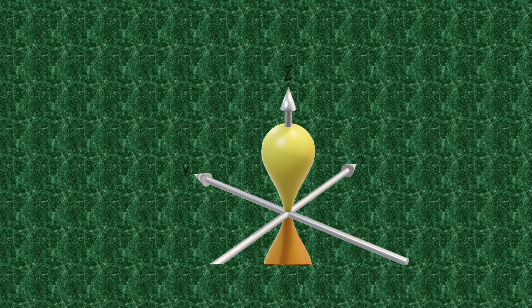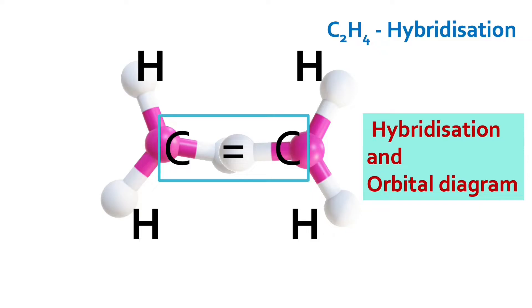These atomic orbitals overlap with half-filled atomic orbitals of another atom and form covalent sigma and pi bonds.